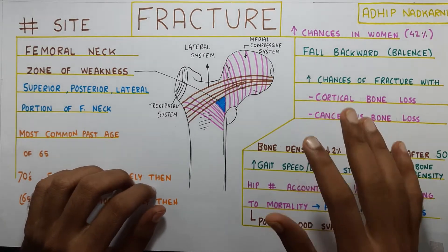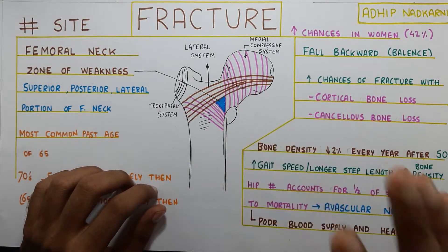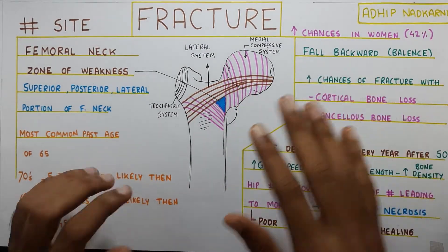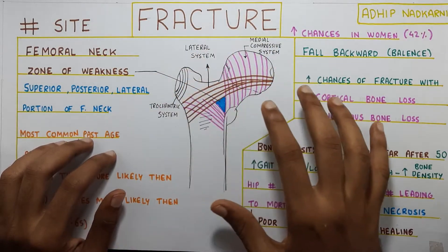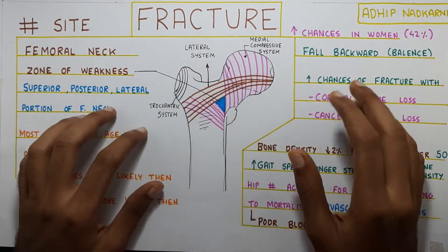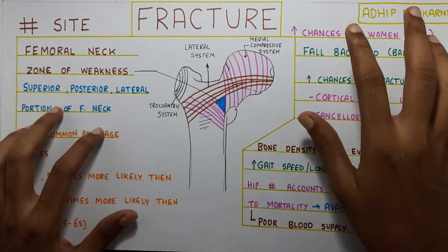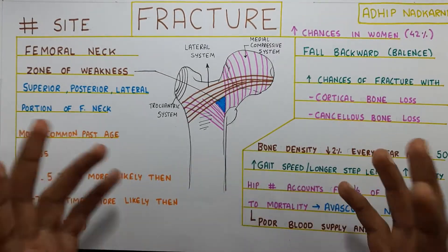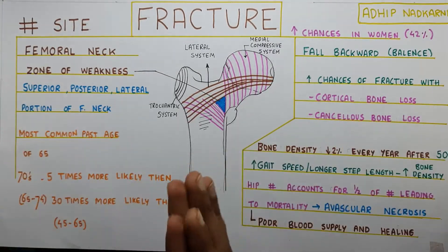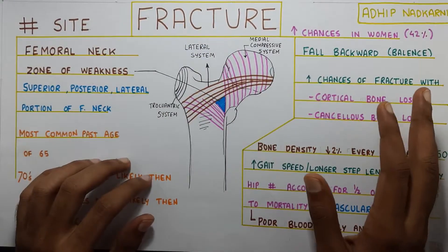In this video we are going to talk about the pathology of the hip joint, and this will be the last part — the fracture. Under fracture we will be covering the site of the fracture, the risk factors, and then what happens with age.